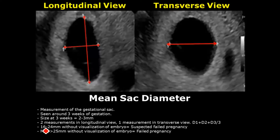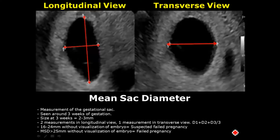If the mean sac diameter is 16 to 24 millimeters and there is no visualization of the embryo, it may indicate a failed pregnancy but is not confirmed. If the mean sac diameter is more than 25 millimeters and there is still no visualization of the embryo, then it is a failed pregnancy.